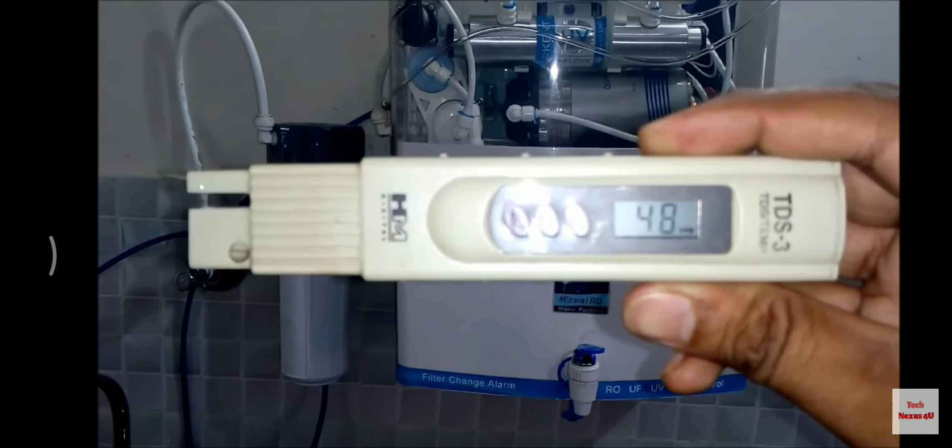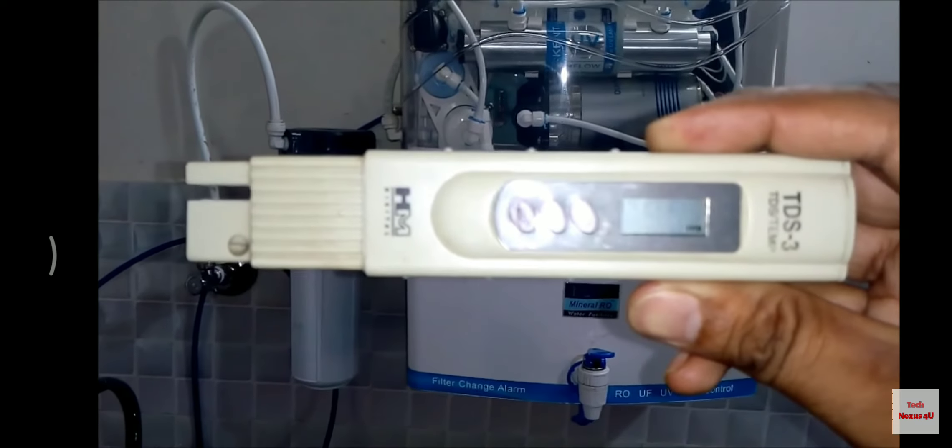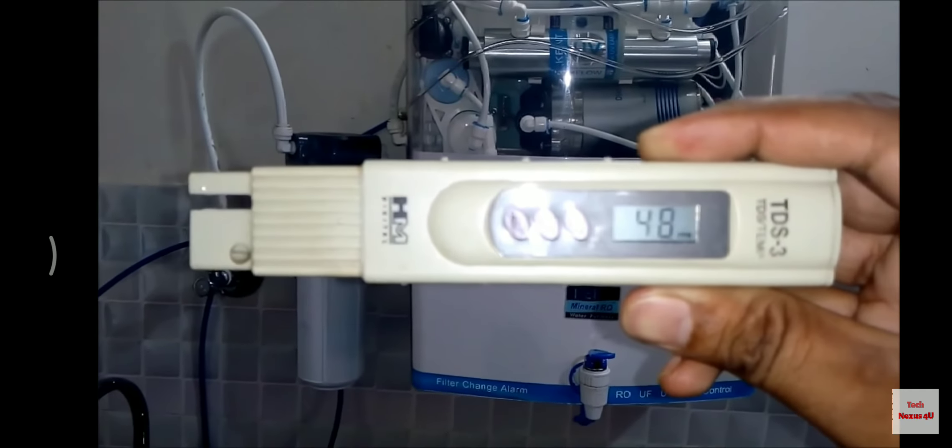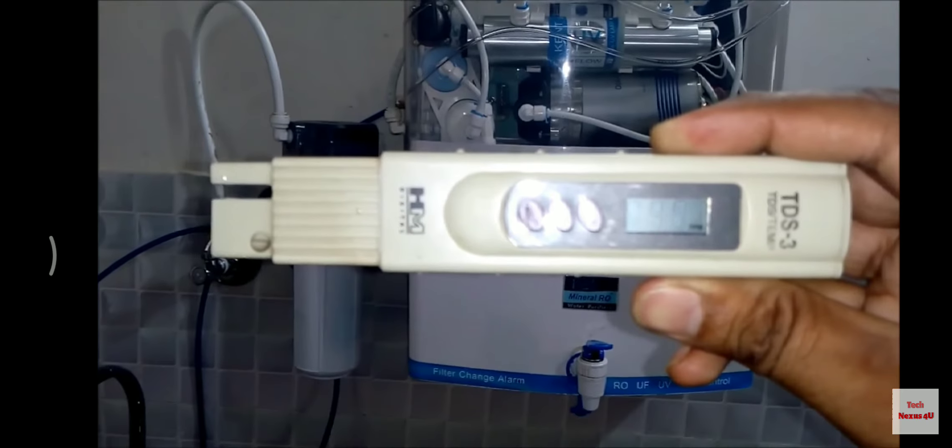This is basically a measuring unit. TDS is measured in PPM which stands for Parts Per Million. We call it milligrams per liter or PPM.